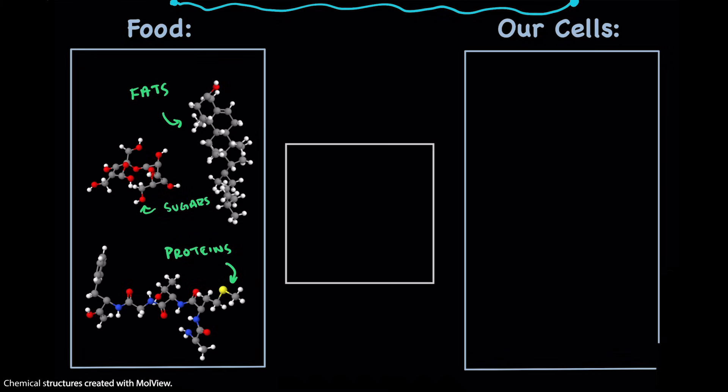These molecules are made basically from just a few elements. So this is color-coded, and the gray balls are carbon, the white ones are hydrogen. Those are the big ones. Most of life's molecules are made mostly of carbon and hydrogen.